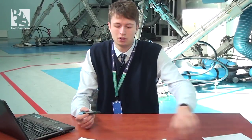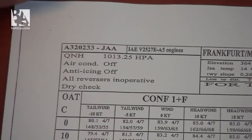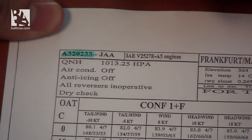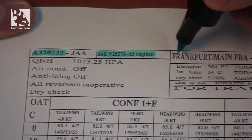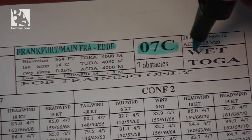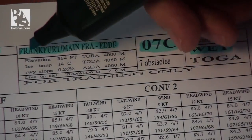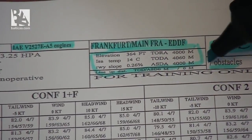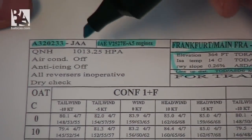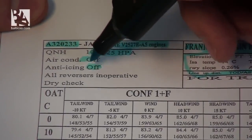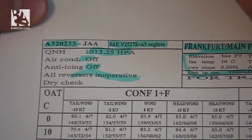After finding the V speeds for the 737, let's check how we do it on the Airbus A320. We first identify the table for the Airbus A320-233 with IAE engines. The chart is for Frankfurt Main Airport runway 07 Center with wet conditions. We can read the general runway conditions and see that there are seven obstacles. The general conditions for the aircraft and weather show: QNH 1013 standard, air conditioning off, anti-icing off, reverser inoperative — and that is the dry check.